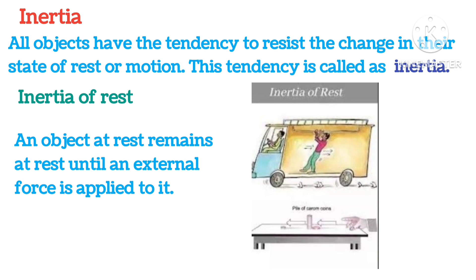As you can see in the picture, when a car accelerates, the passenger feels their body moving backwards. This is because inertia is making their body stay in place. Similarly, when a pile of coins on the carom board is hit by a striker, the coin at the bottom of the pile moves away, leaving the rest of the pile of coins at the same place.